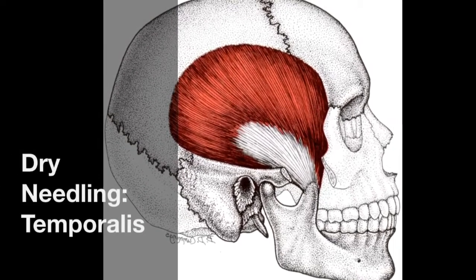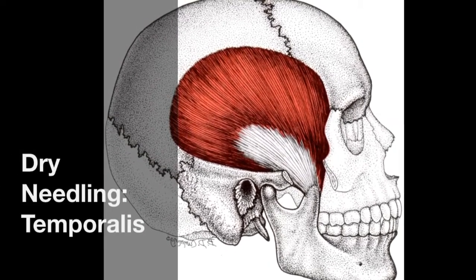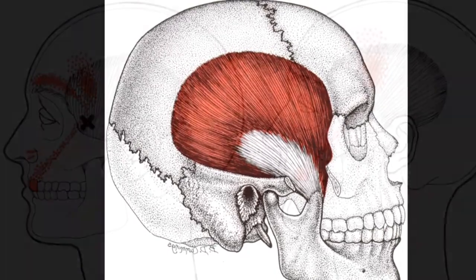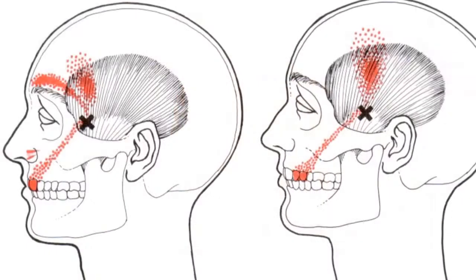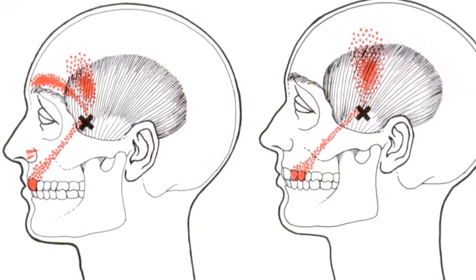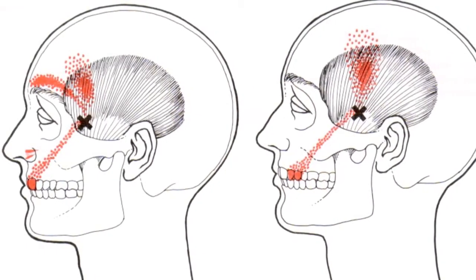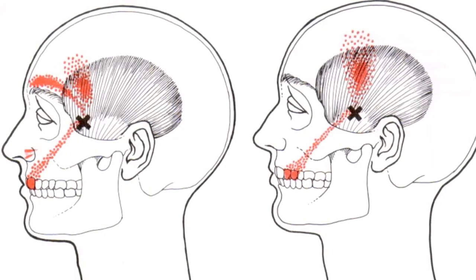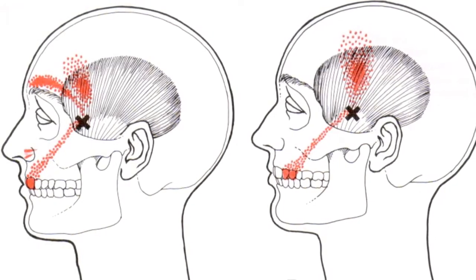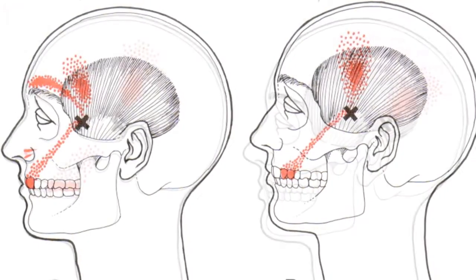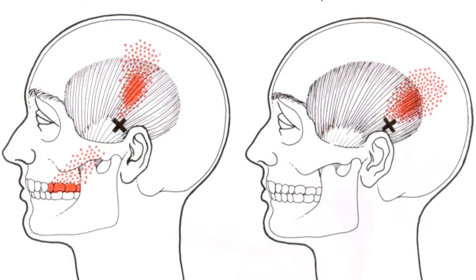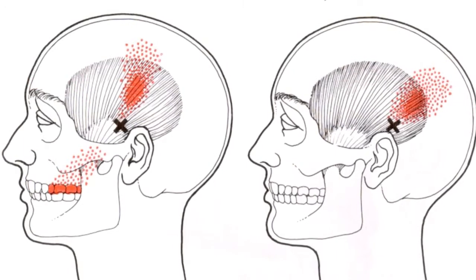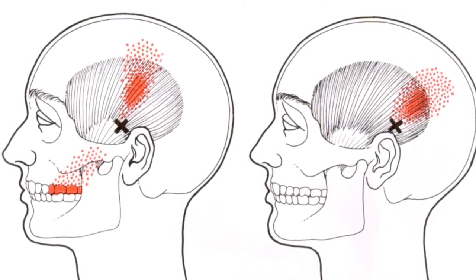This video looks at the dry needling of the temporalis muscle. Innervated by the mandibular branch of the trigeminal nerve, referred pain may be felt in the temporal and parietal regions, down to the eyebrow, giving sensations of temporal headaches as well as maxillary toothache.